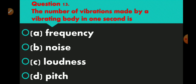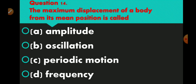Question number 13: the number of vibrations made by a vibrating body in 1 second is. Option A frequency, option B noise, option C loudness, option D pitch. Right answer is frequency — option A. Question number 14: the maximum displacement of a body from its mean position is called. Option A amplitude, option B oscillation, option C periodic motion, option D frequency. Right answer is option A — amplitude.